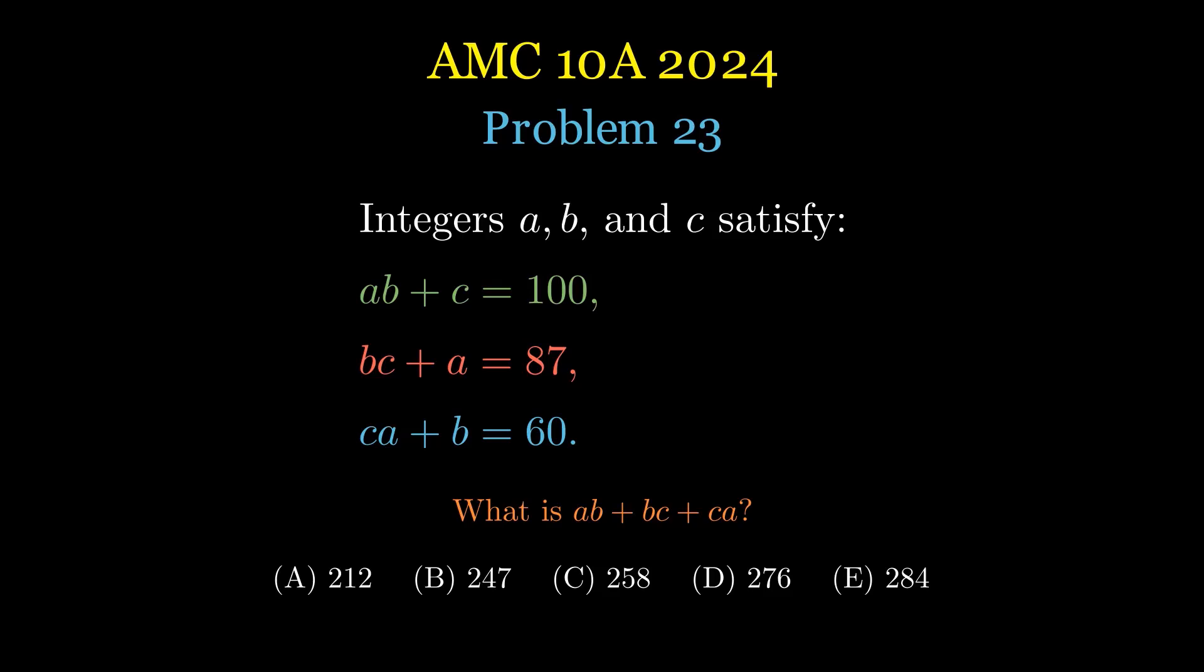First equation, A times B plus C equals 100. Second equation, B times C plus A equals 87. Third equation, C times A plus B equals 60.